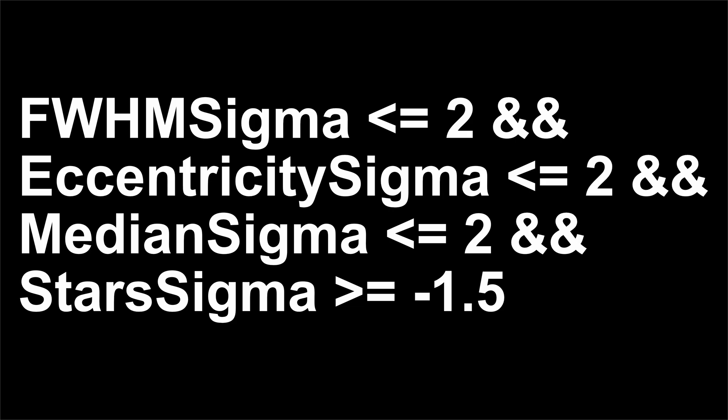The double ampersand is a connector telling the expressions window to look for the next statement. And the next statement is eccentricity sigma less than or equal to 2. This tells the subframe selector to look for any stars that are somewhat erratic or out of shape, and anything beyond the second standard deviation of normalcy is also rejected. Then the double ampersand after that tells the expressions editor to look at the next expression: median sigma less than or equal to 2. Median often finds images that have been obscured by cloud cover or other obstructions.